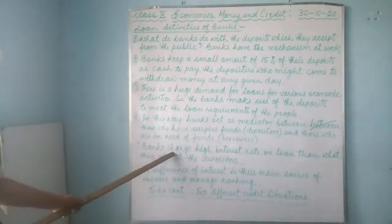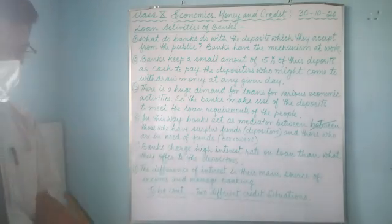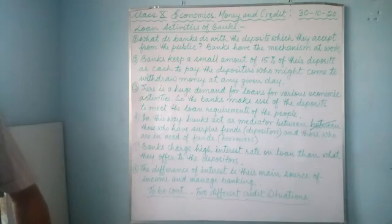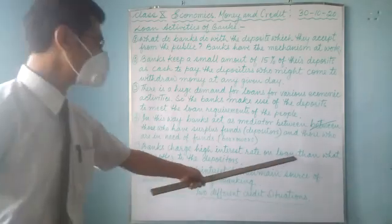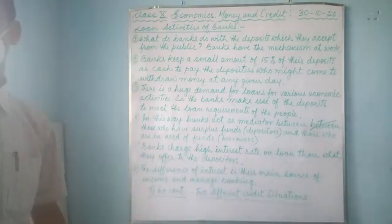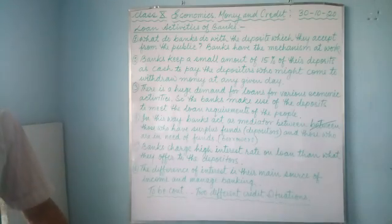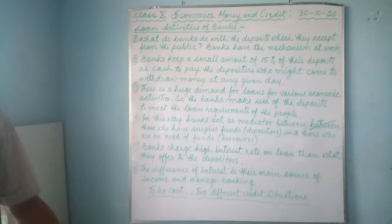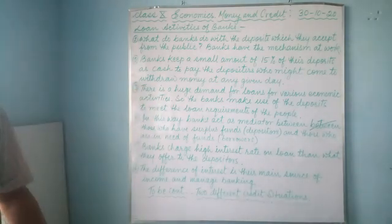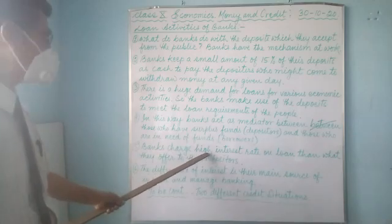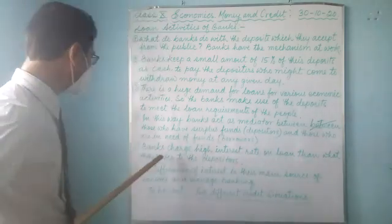In this way, the bank charges a high interest rate on loans. When the bank provides a loan, it charges high interest. For example, if I deposit money in the bank, the bank might pay me 5% interest on my savings account. But when the bank provides a loan to other people, it charges 15% — so there is a difference of 10%.